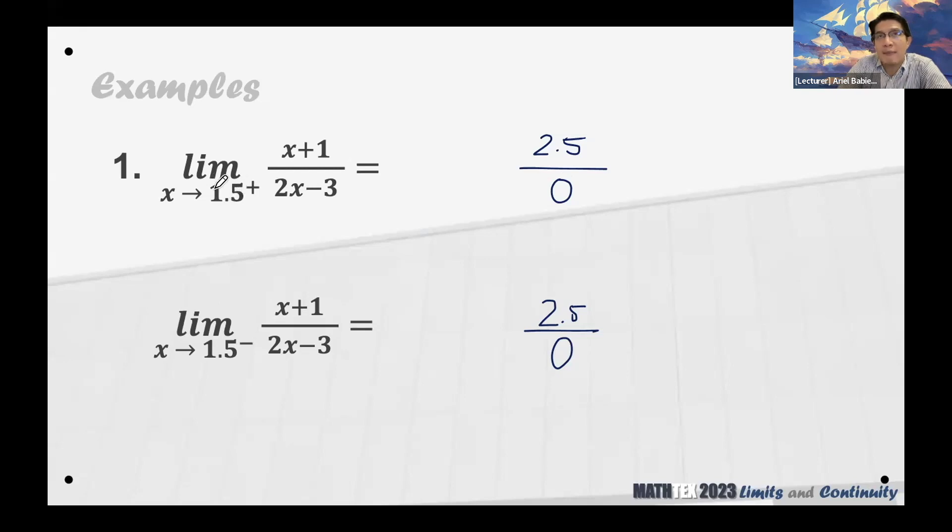Values that are greater than 1.5. So if that is a value greater than 1.5 and if we multiply that by 2, it will be a value that is also greater than 3, tama ba? 2 times 1.5 is 3.